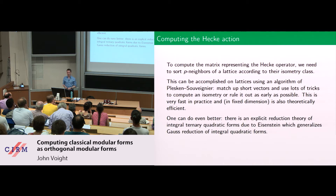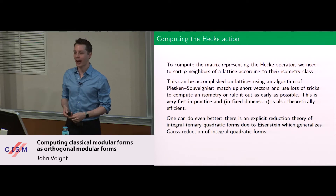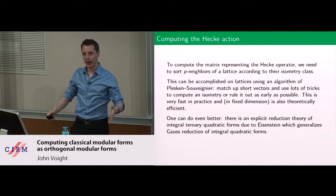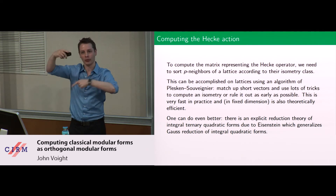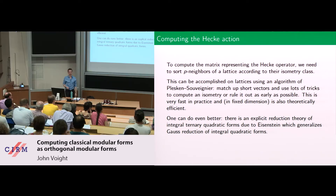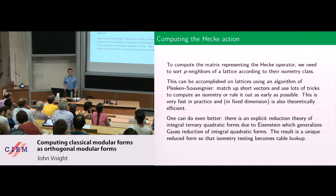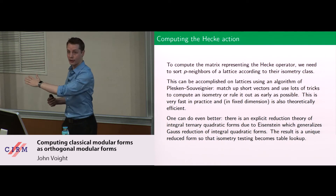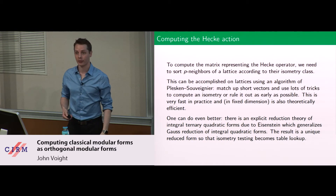Actually in our case we can do even better. This is already in Birch's original paper. There's an explicit reduction theory of integral ternary quadratic forms going back to Eisenstein, just like the Gauss reduction of integral binary quadratic forms. It gives explicit inequalities for what it means to be a reduced form — really beautiful and really fast. If you want to do isometry checking and you have an algorithm that gives you a unique reduced form, all you have to do is table lookup. You hash it and look it up in the table — way faster and way cool.